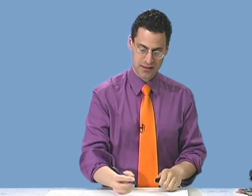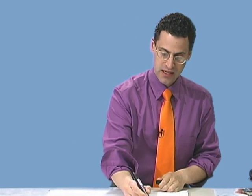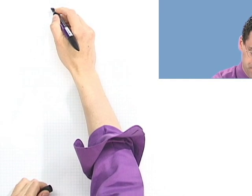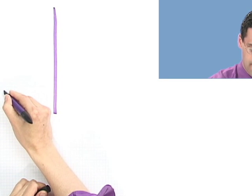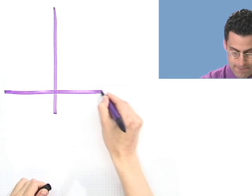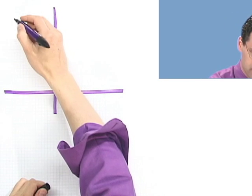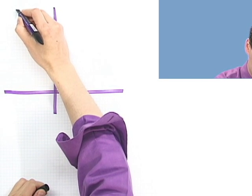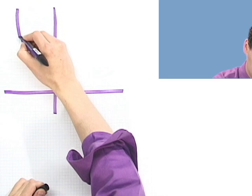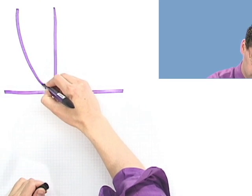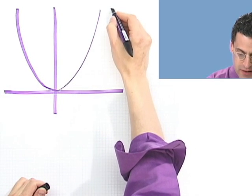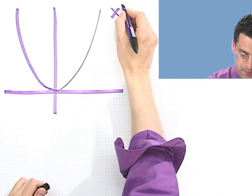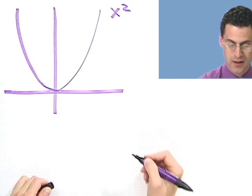The most basic even degree is, of course, the parabola — the first and simplest one. That one just looks like a classic U shape. This is y equals x squared.